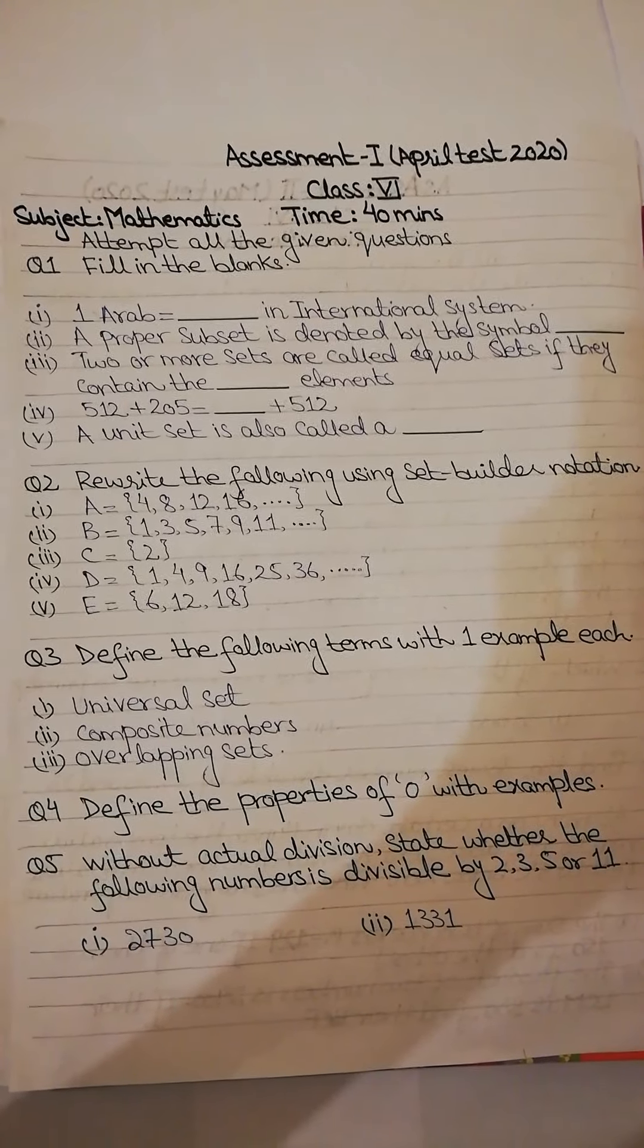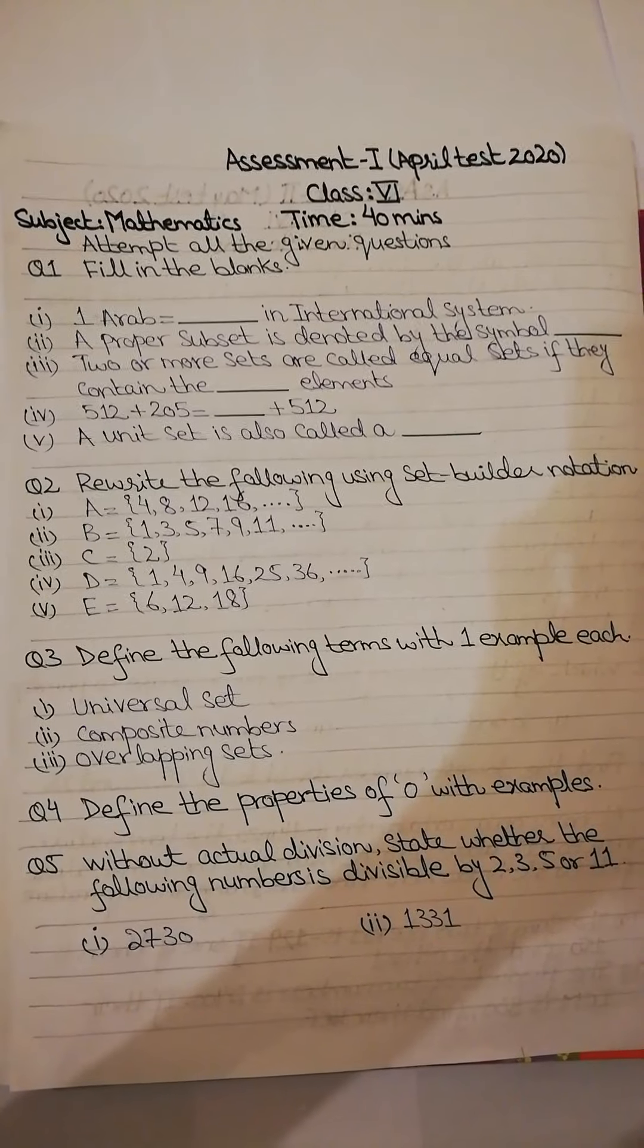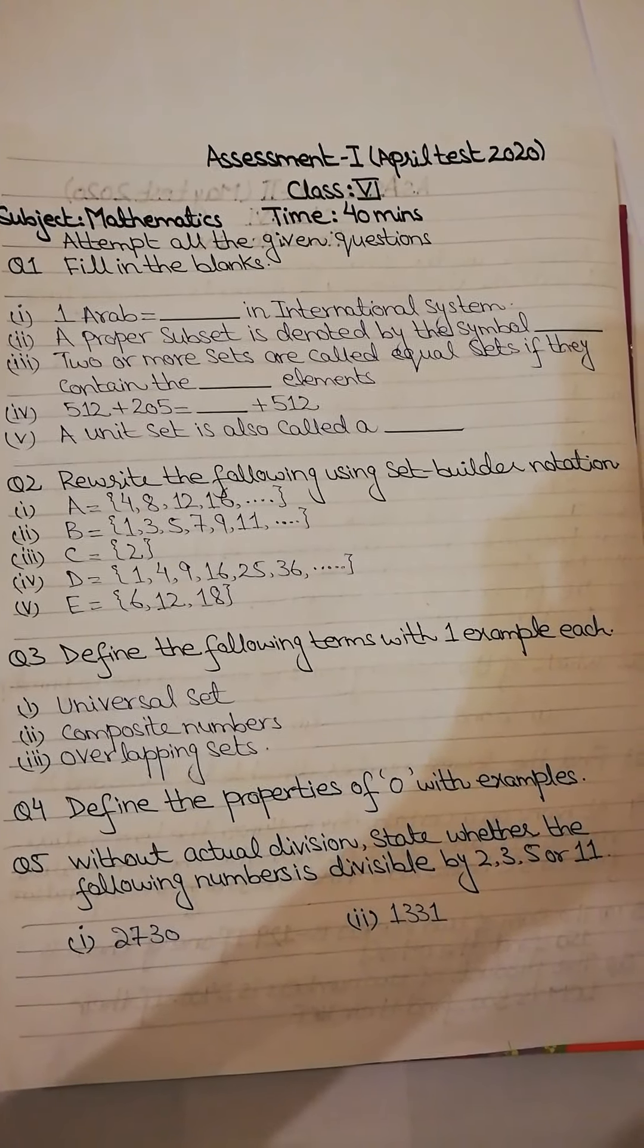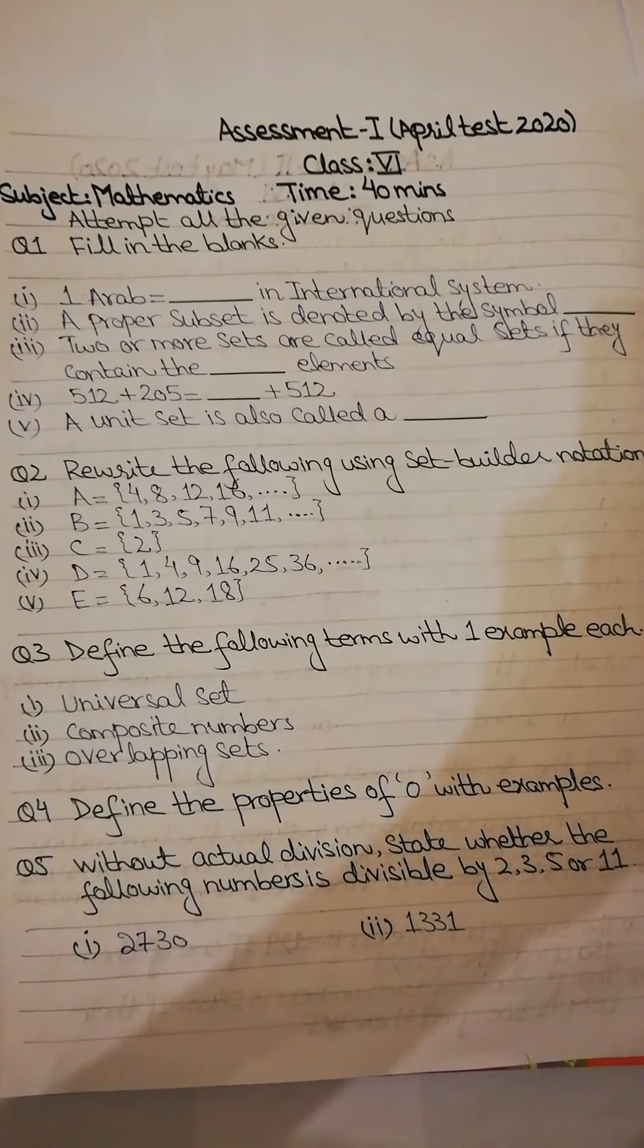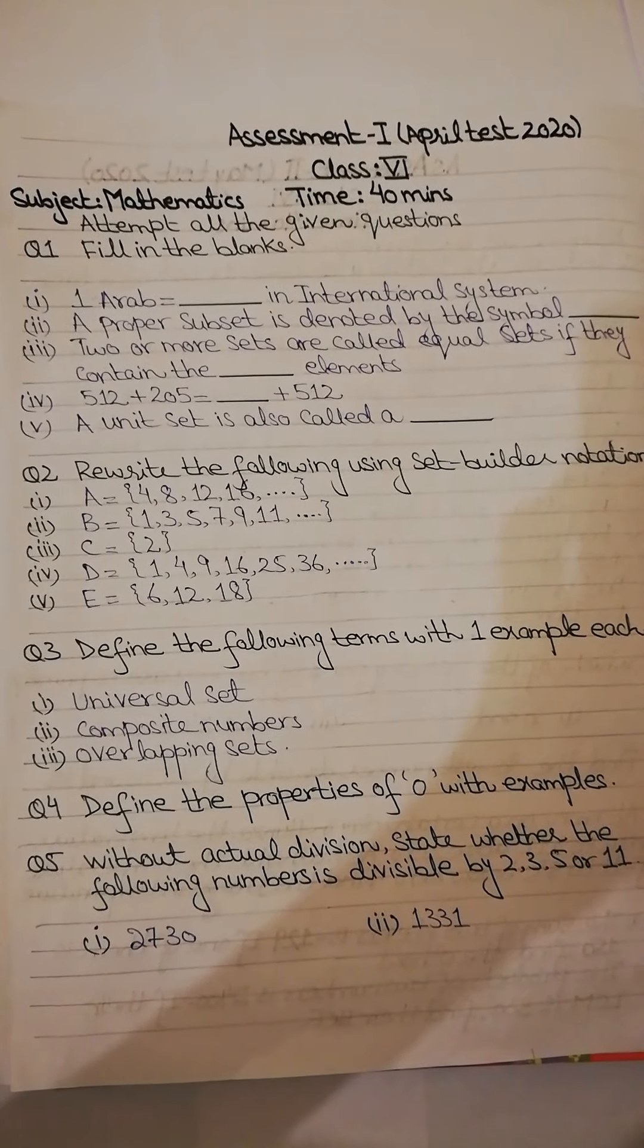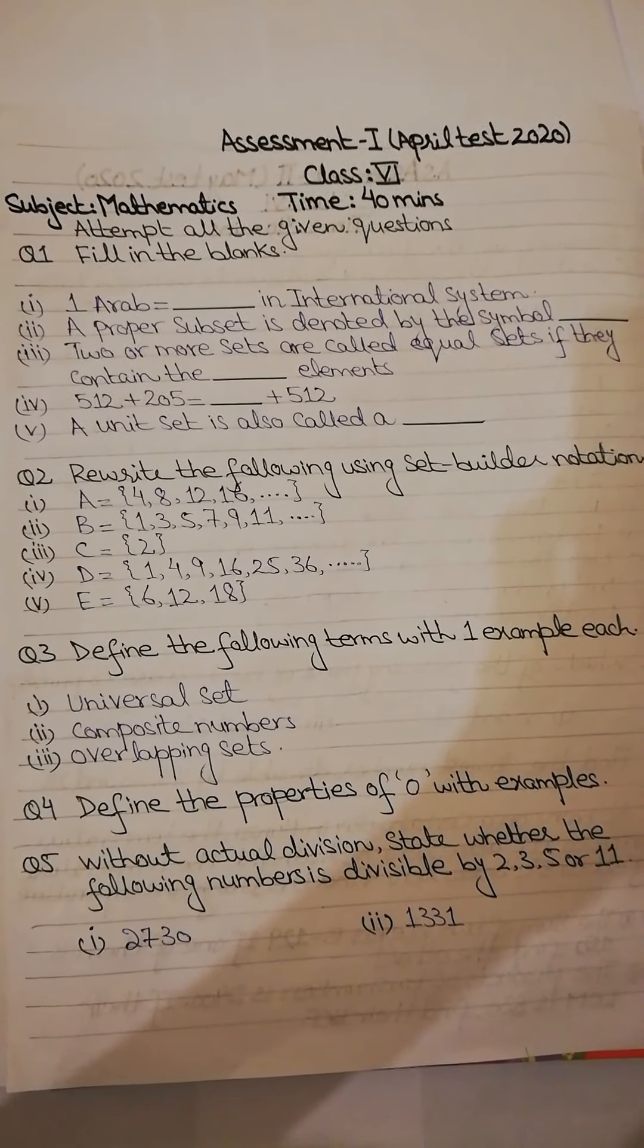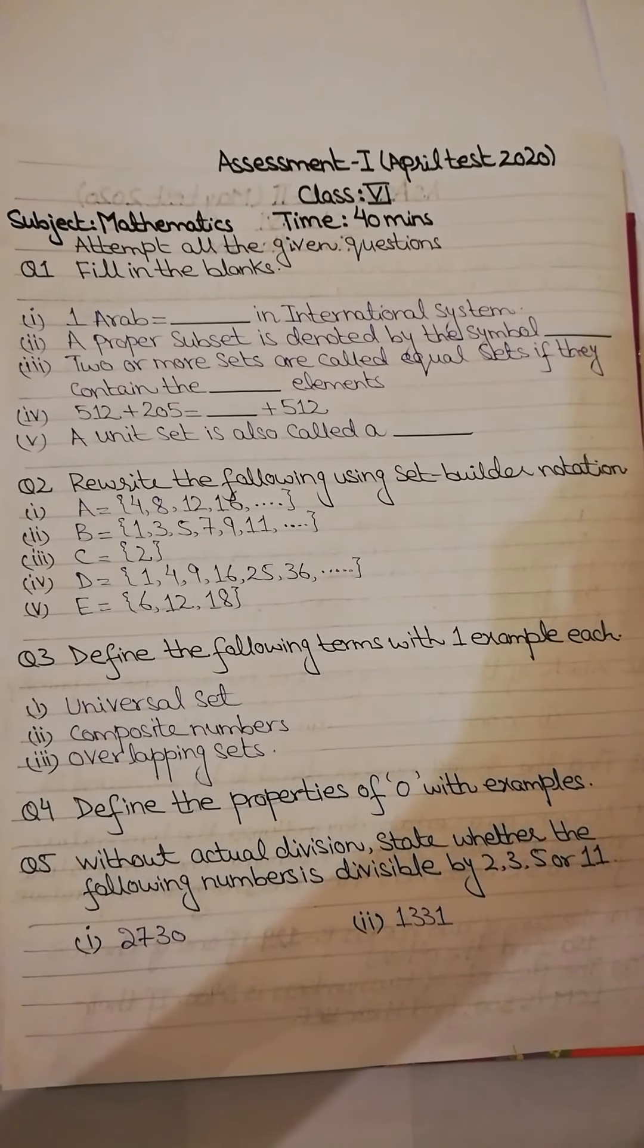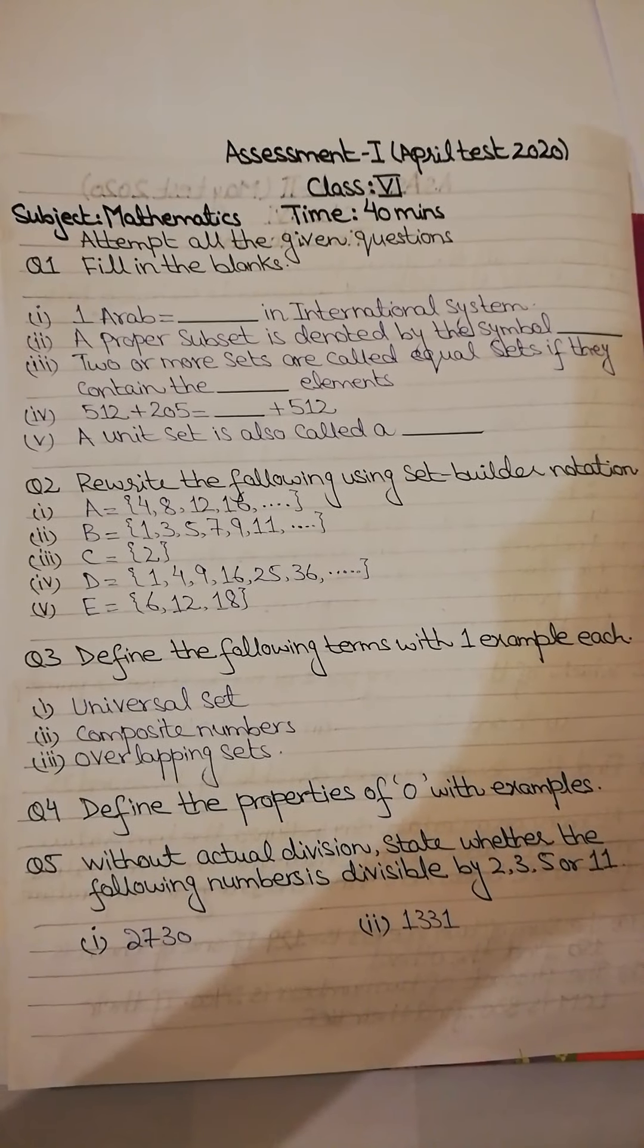Third, set C, set of elements are 2. Fourth, set D, set of elements are 1, 4, 9, 16, 25, 36 and so on. Fifth, set E, set of elements are 6, 12 and 18.